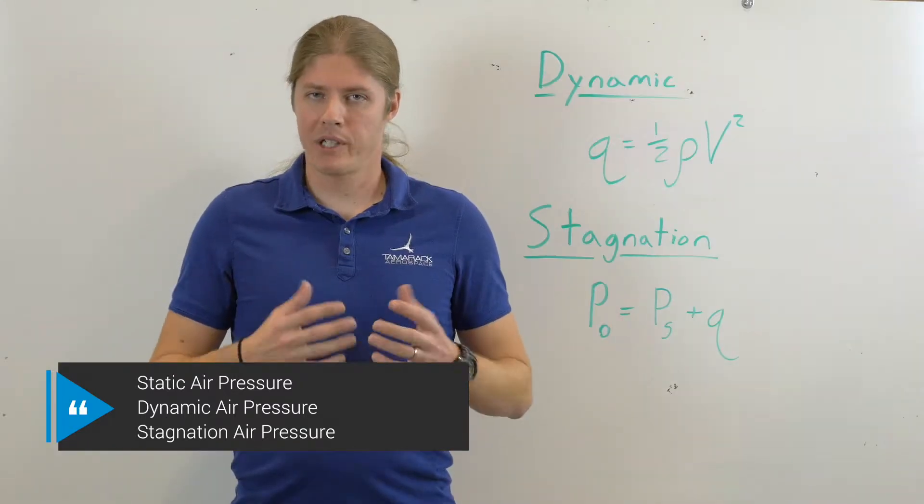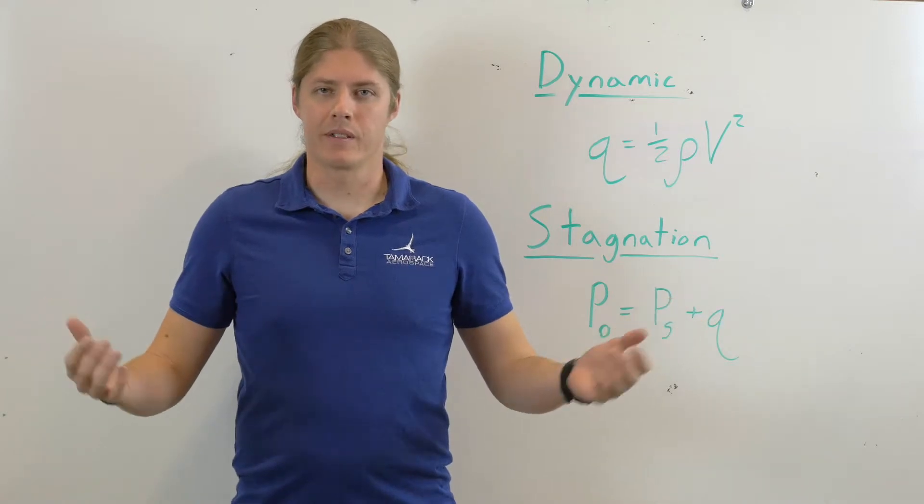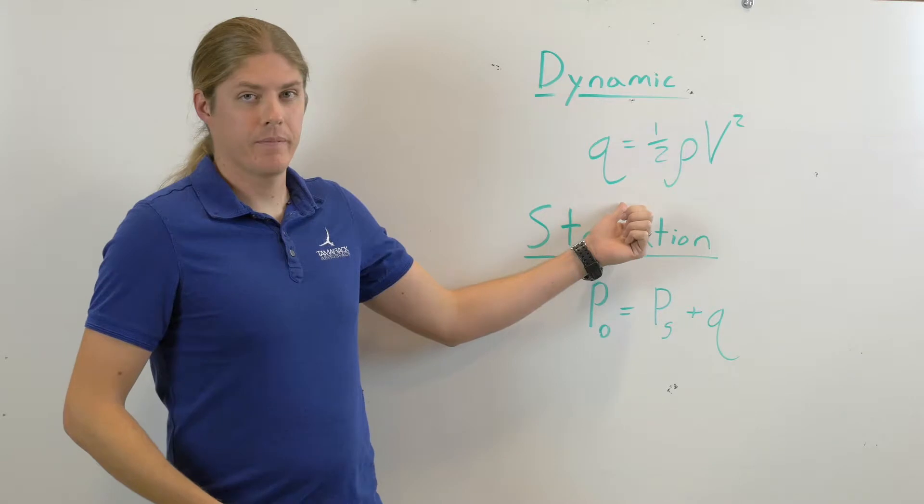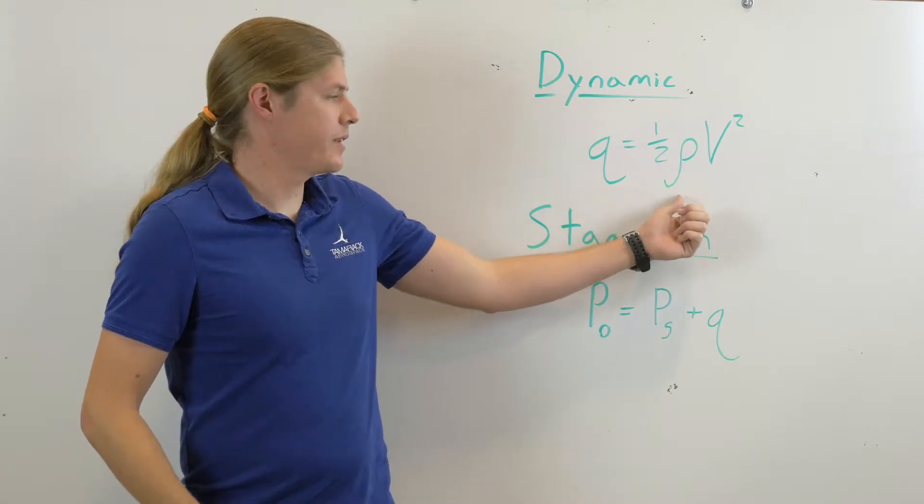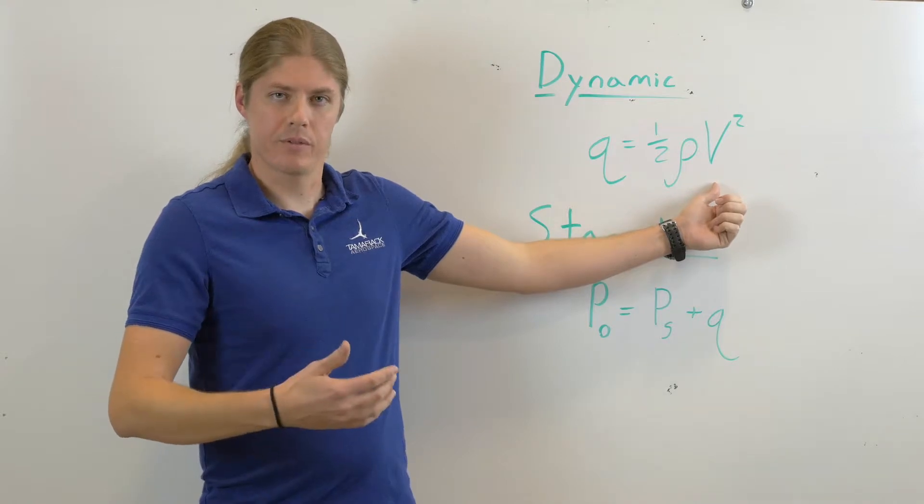The static pressure is the pressure of the air at rest. It's what you feel when you walk outside. The dynamic pressure, represented as Q here, is a relationship of the density of the air, rho, with the square of the velocity of the air as it moves, V squared.